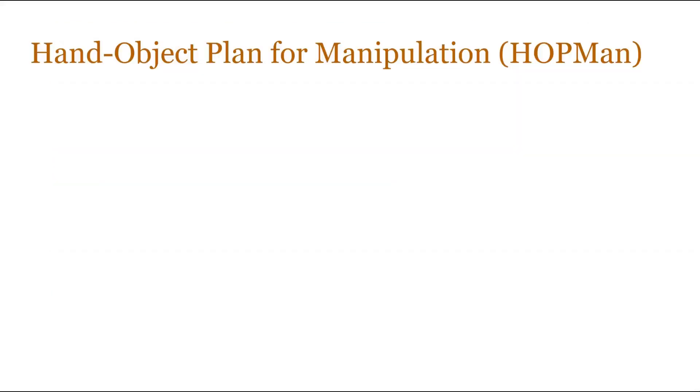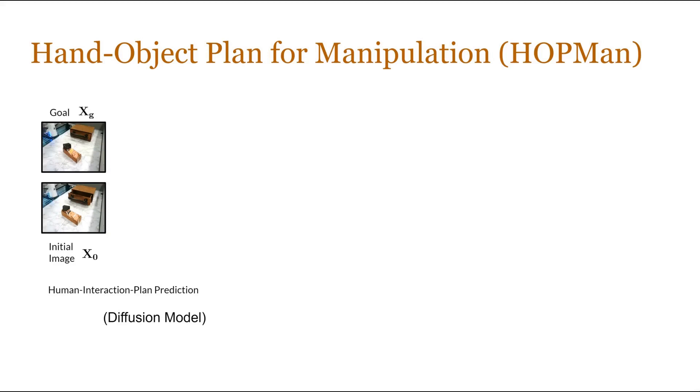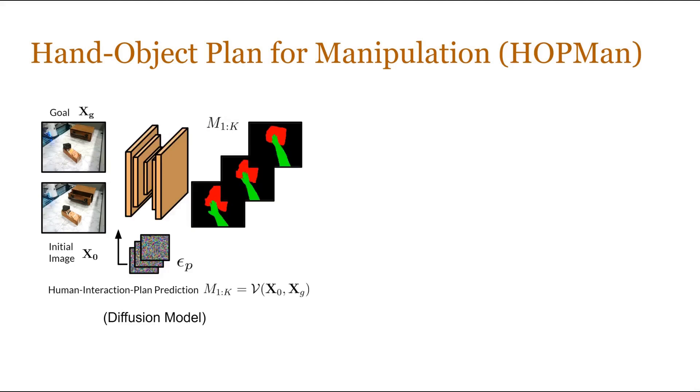Now, let's dive deep into our framework for hand-object plan for manipulation, in short, HOPMan. The first module is the human interaction plan prediction model, which we instantiate as a diffusion model. This takes in the initial image and the goal image as input, along with noise as intermediate frames. We learn to denoise those intermediate frames into semantic masks of hands and objects in the form of a temporal trajectory. We call this the human plan.